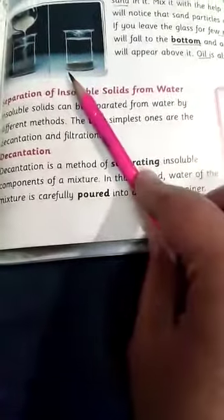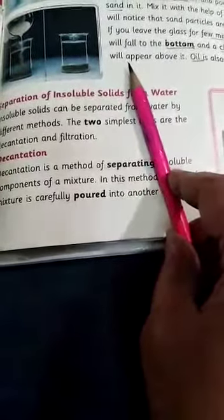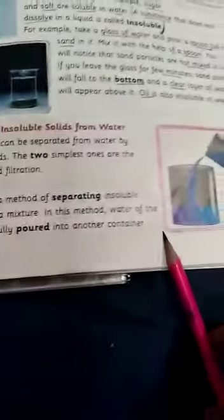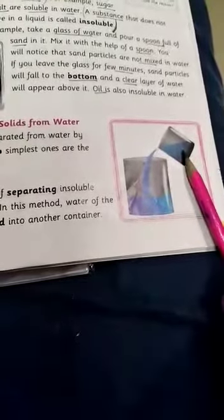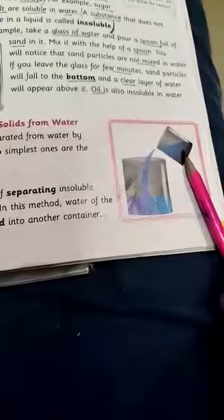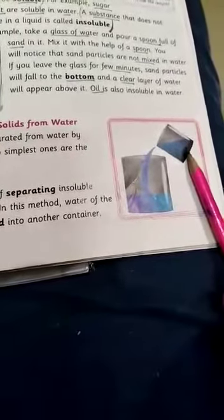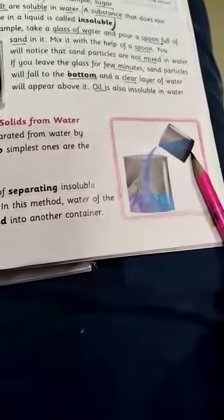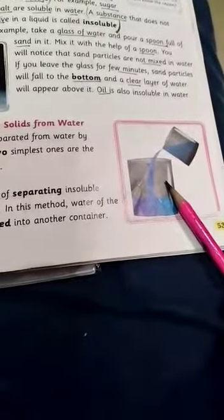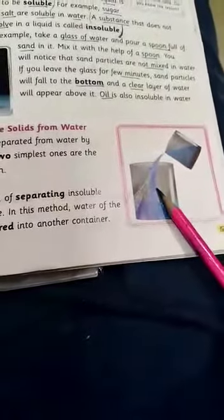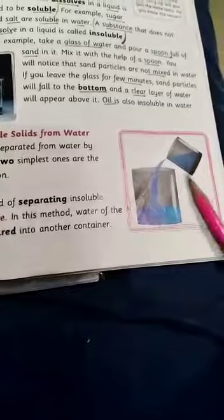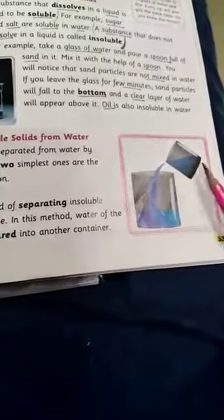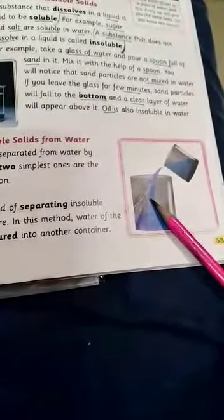For example, sand mixed with water. Sand is insoluble, so we use the decantation method. We pour the water into another container. We will separate the sand from the bottom. Water and sand will be separated by the decantation method.